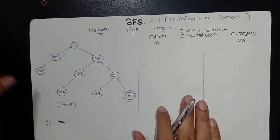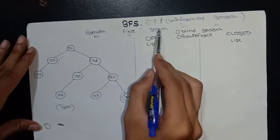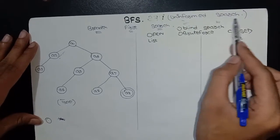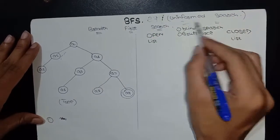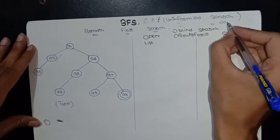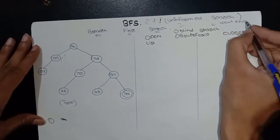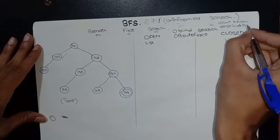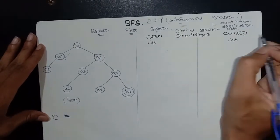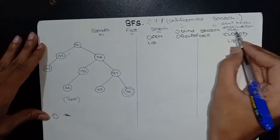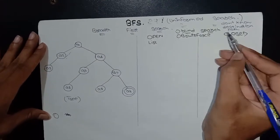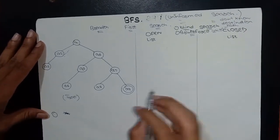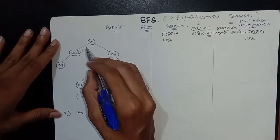Hey guys, this is Hamza and today I'm going to explain a very important searching technique in artificial intelligence which is called Breadth First Search. BFS lies under the type of uninformed search. In an uninformed search, we don't know the destination path or goal state path, so we search blindly. It is also called blind search and also called brute force search.